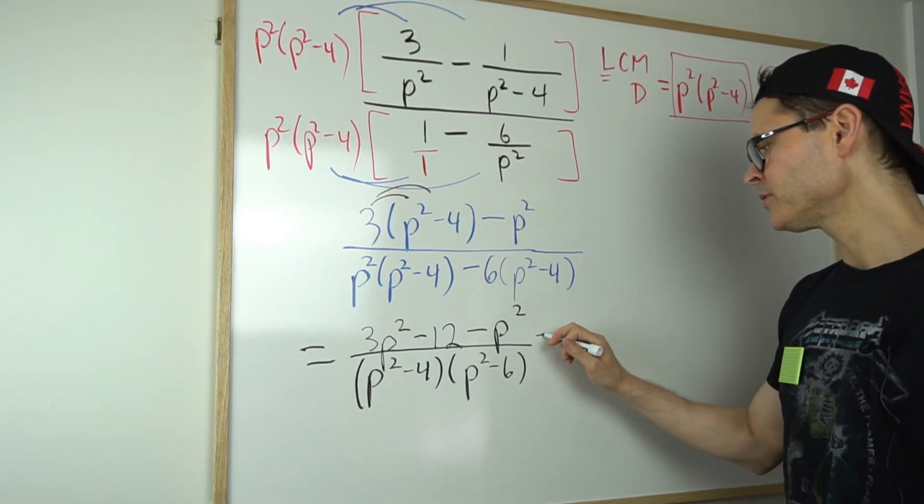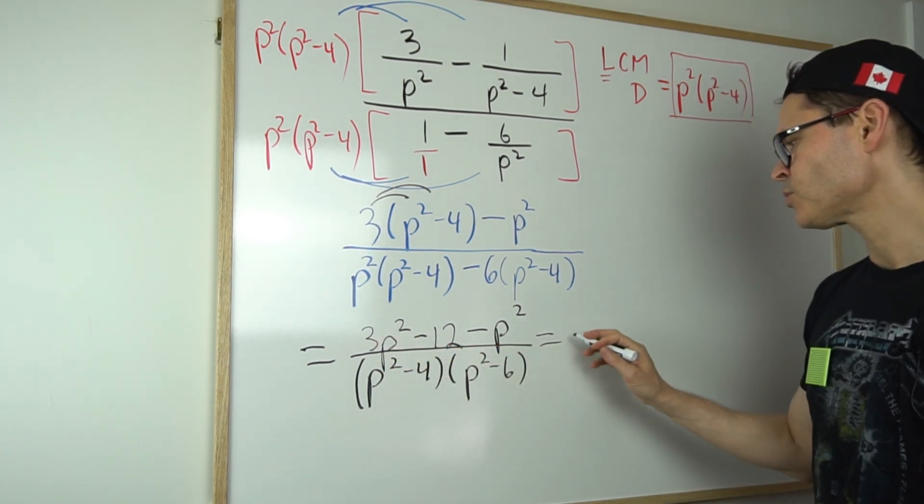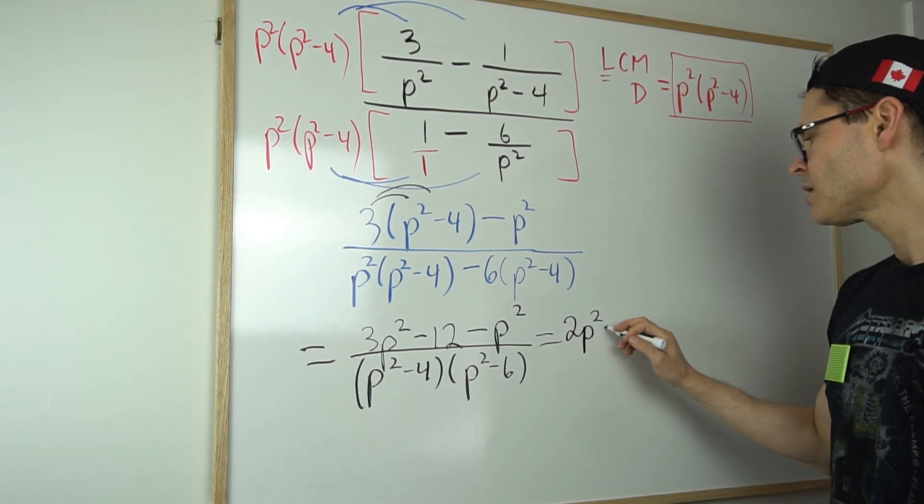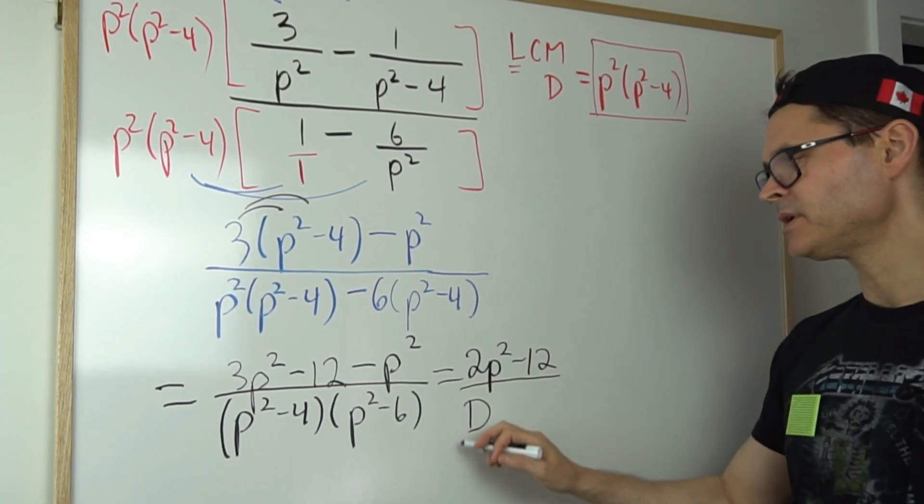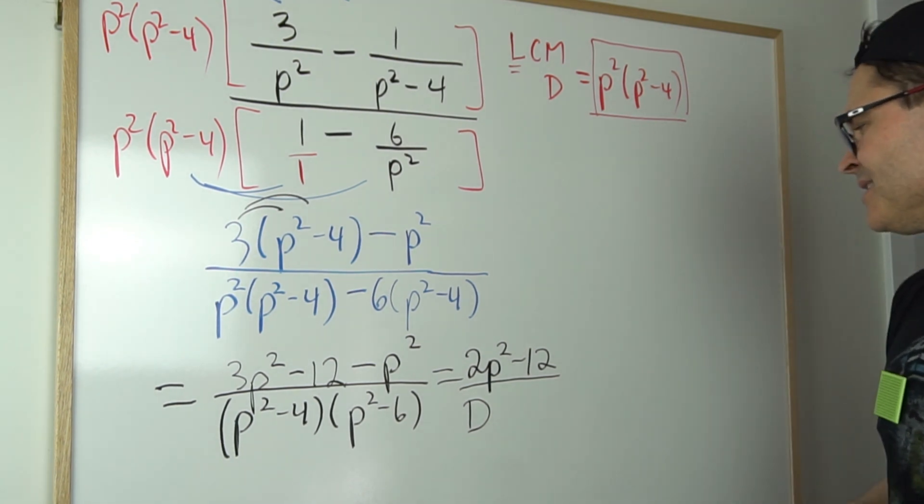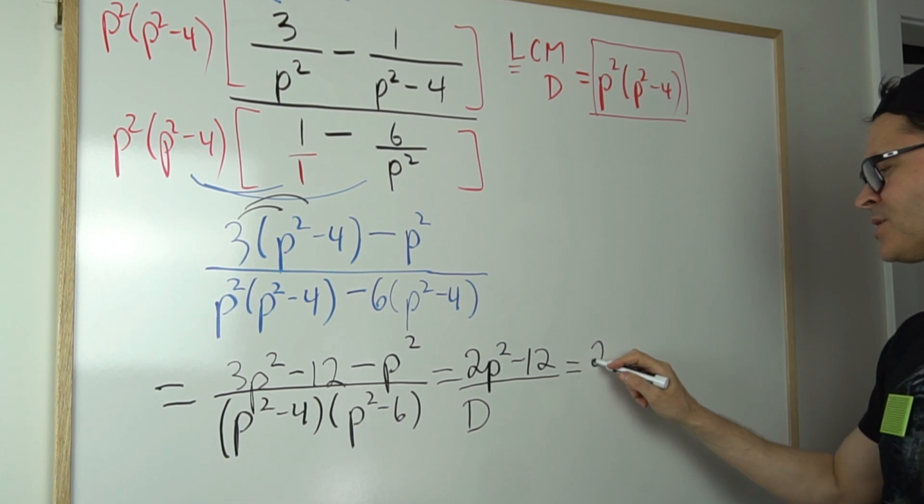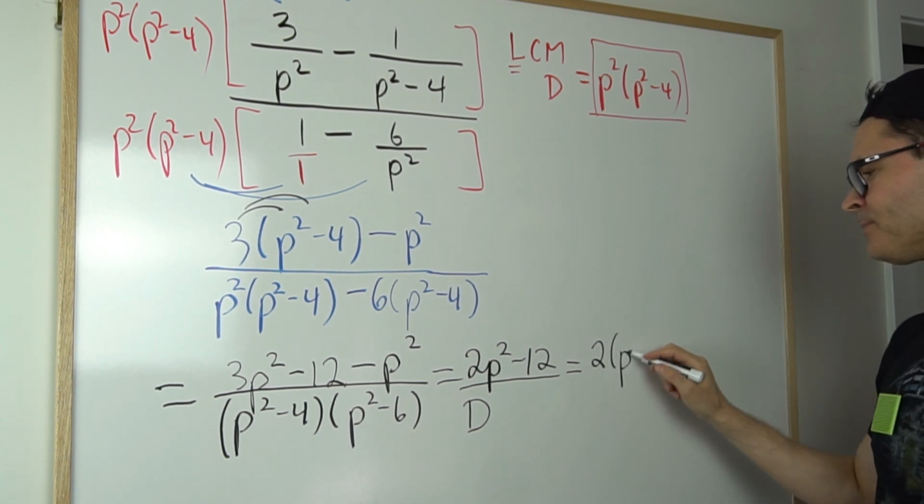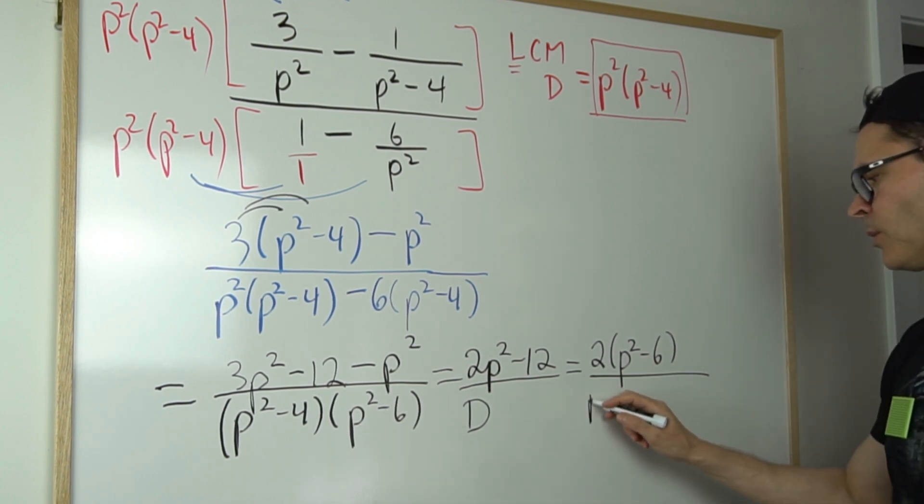Okay, onward and upward. The numerator can be simplified, so three p squared minus p squared is two p squared minus 12, all over—I'm just going to save the denominator.